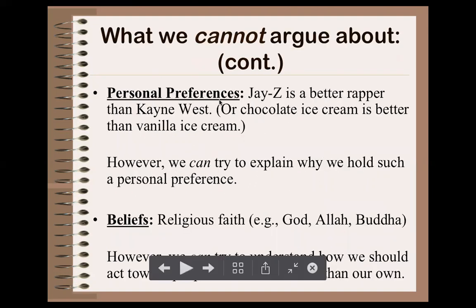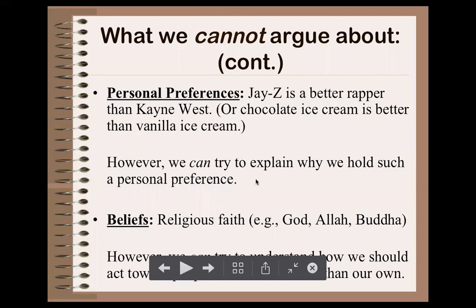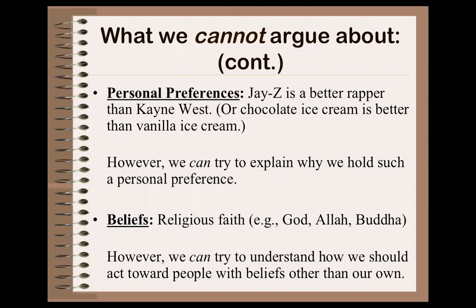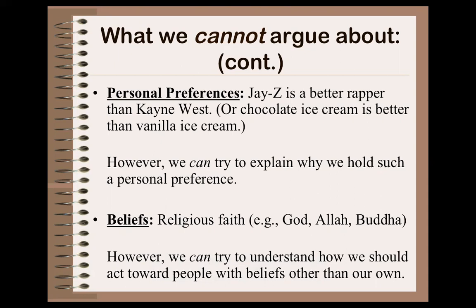Another category we cannot argue are personal preferences — chocolate ice cream is better than vanilla, or this artist is better than that artist. The only way you can do that is to try to explain why using the same criteria in a comparison-contrast. Finally, the last category we cannot argue logically are beliefs, particularly religious personal beliefs. There are different gods — Allah, Buddha — and you can try to understand how people hold those beliefs, but we don't argue them because they're just that: your own belief.